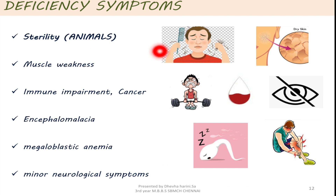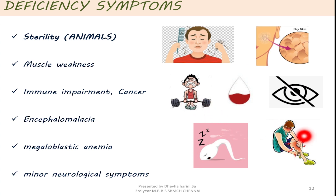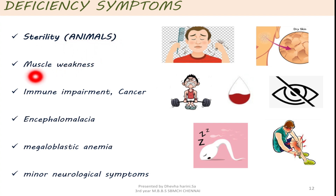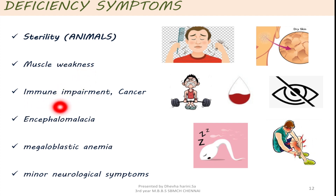Deficiency symptoms: in a vitamin E deficient patient, there will be loss of hair, dry skin, blindness, anemia, muscular weakness, impairment in the reproductive function, and leg cramps. Deficiency can lead to sterility, which has been proven only in animals. Vitamin E is important in maintaining muscle strength, so deficiency will lead to muscular weakness. When there is a vitamin E deficiency, free radicals are generated which will lead to immune impairment and cancer.